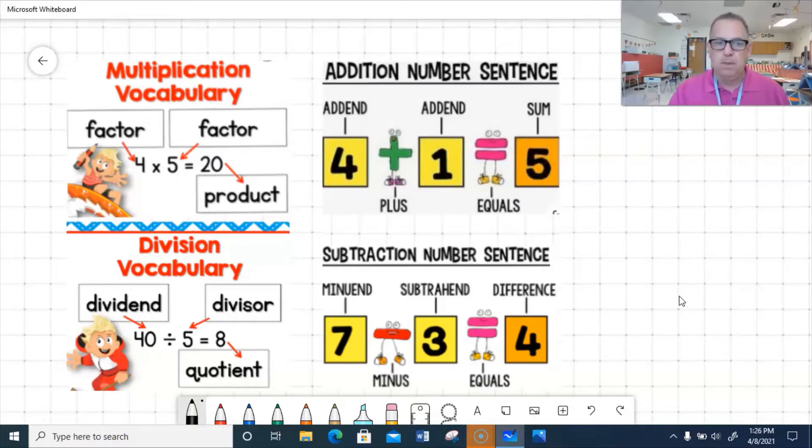So we need to be familiar with all the vocabulary for all those. For multiplication, the answer to a multiplication problem is a product, and there's two factors to make the product. And we can switch those factors around, and we'll still get the same product. For division vocabulary, you have a quotient, is the answer to a division problem. And dividend divisor are the two parts. You cannot switch those two around. I cannot say that 5 divided by 40 equals 8. That's not a true statement.